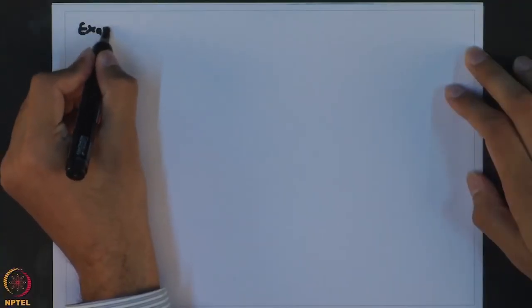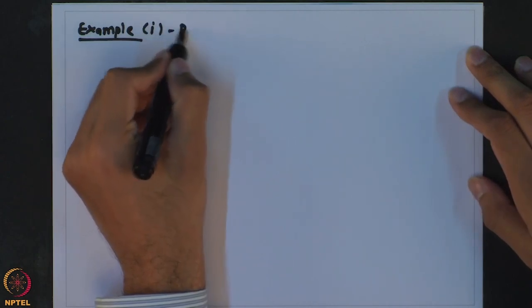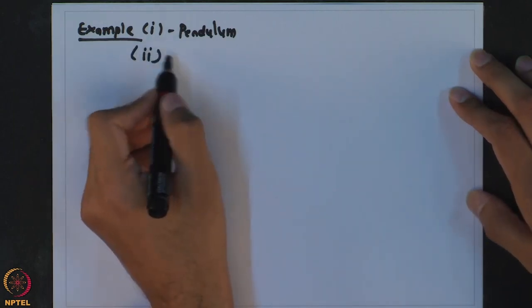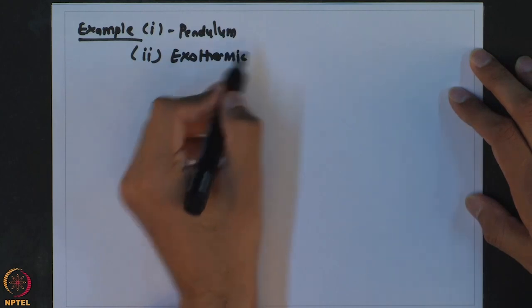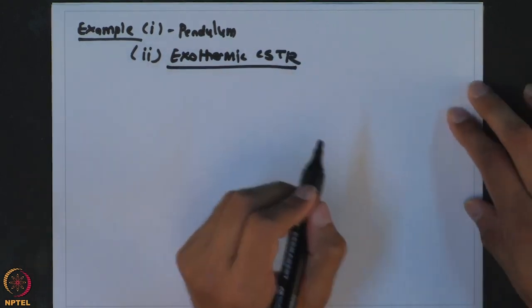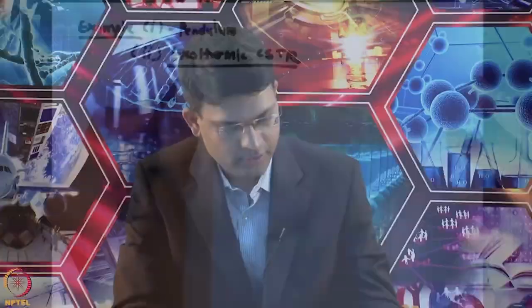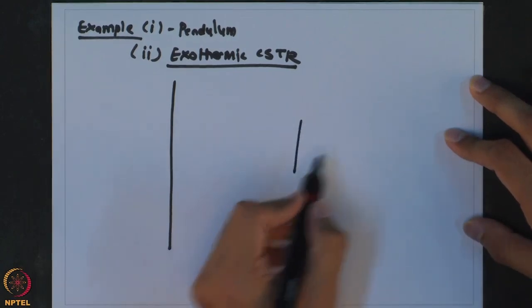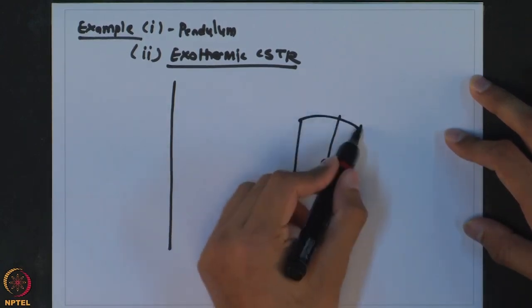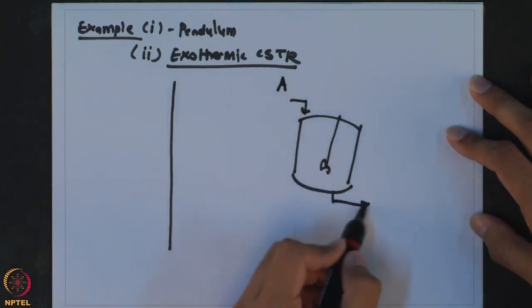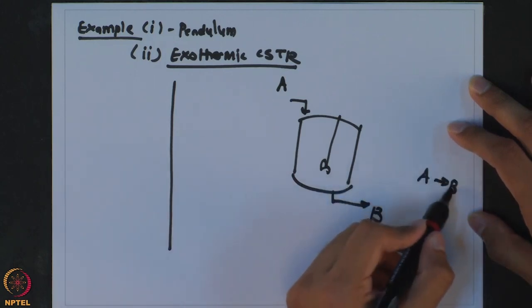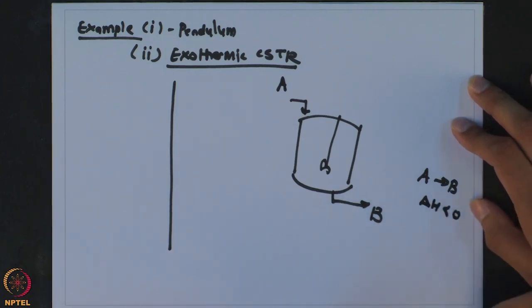We characterized stability based on a disturbance: if the effect of a disturbance keeps the system close to the steady state, it is a stable steady state; if it deviates from that steady state, we call it an unstable steady state. Now let us consider a second example — an exothermic CSTR. This system is typically studied extensively in reaction engineering and has very peculiar behavior.